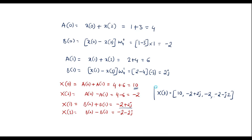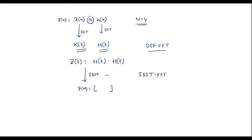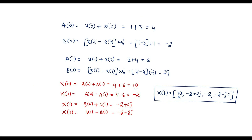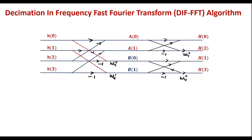Therefore, X(k) = {10, -2+2j, -2, -2-2j}. We have found X(k). Now we are supposed to calculate H(k). The h(n) values are: h(0)=1, h(1)=1, h(2)=1, h(3)=1.